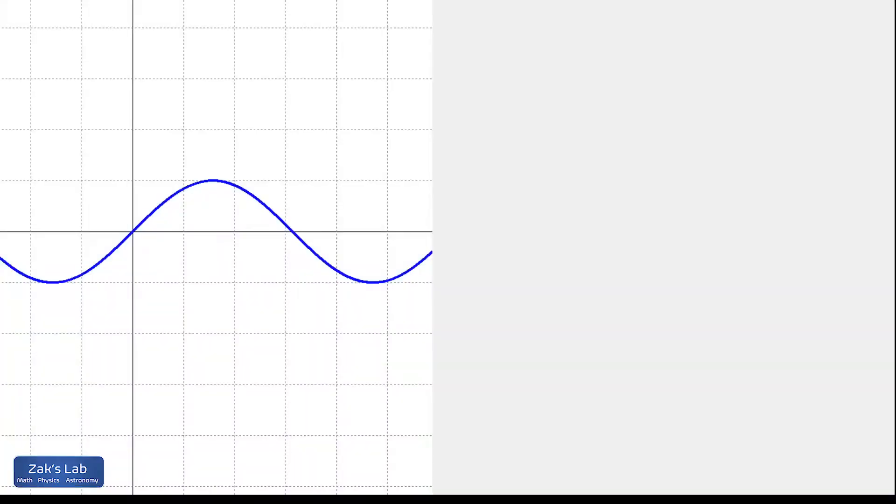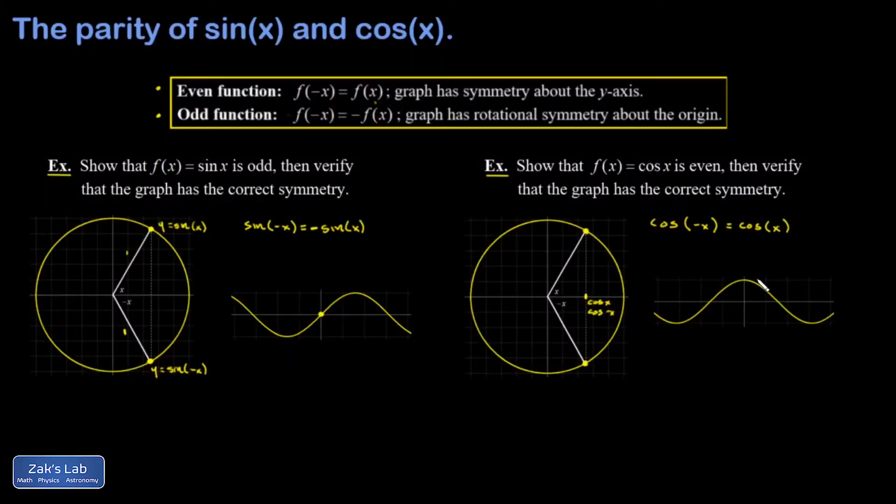Let's look at a graph of it. When I plot the cosine function, I do see that symmetry about the y-axis that I'm supposed to see for even functions.